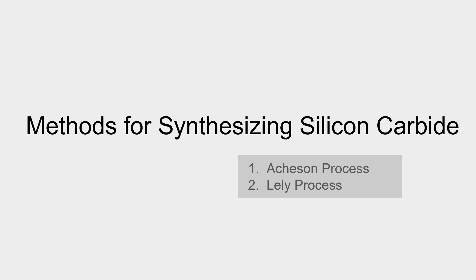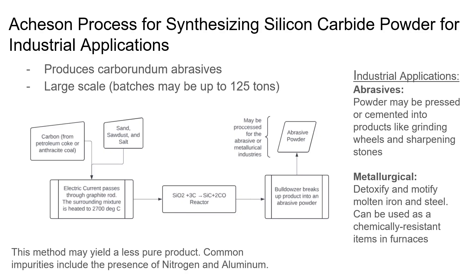Methods for synthesizing silicon carbide: the Acheson process and the Lely process. The Acheson process is used for synthesizing silicon carbide for industrial applications. The diagram below shows how carbon is combined with sand, sawdust, and a little bit of salt.